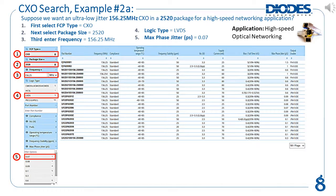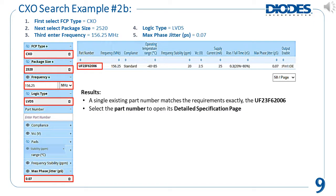Let's consider another example. Suppose we want an ultra-low jitter 156.25 MHz crystal oscillator in a 2520 package for a high-speed networking application. First, select the top three parameters shown here in the red boxes. This narrows it down to 21 existing parts. Next, enter the requirements for logic type equals LVDS and maximum phase jitter equals 0.07 picoseconds. This will narrow it down to a single part. The search table now displays the one matching part, the UF23F62006.